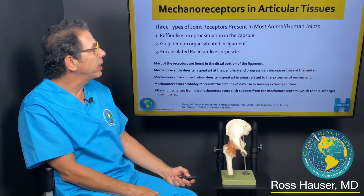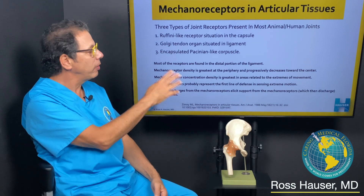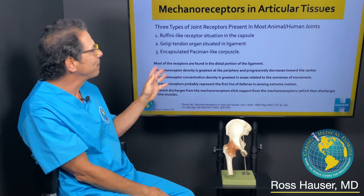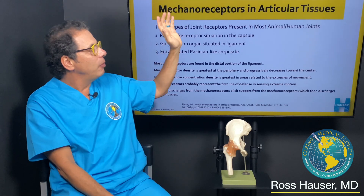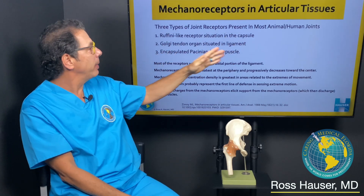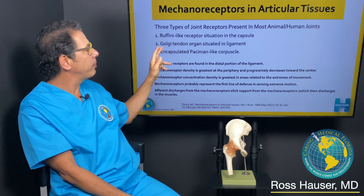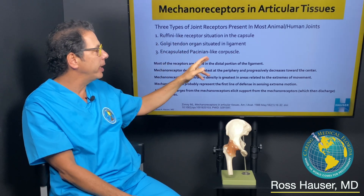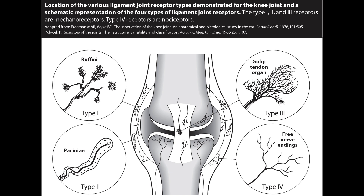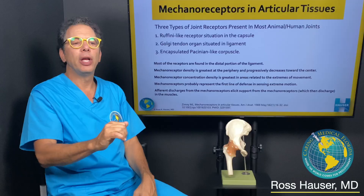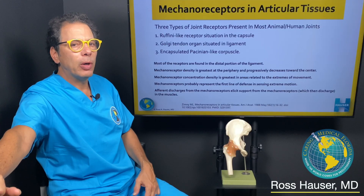I want to go through the neurology of the ligaments. There are certain nerve endings in the ligaments: Ruffini-like receptors, Golgi tendon, encapsulated, and Pacinian-like corpuscles. Most of the receptors — the nerves in the ligaments — are found in the distal portion of the ligament, which is what gets injured when you're at the extremes of motion.